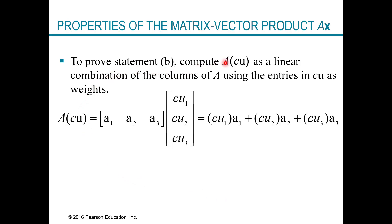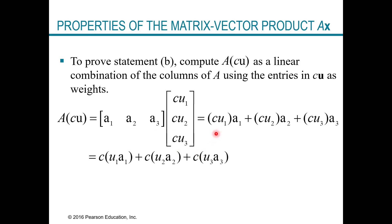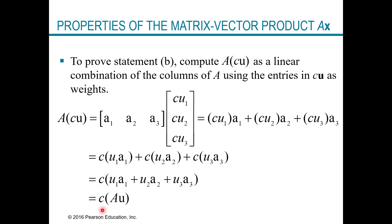To prove part B: A times (c·u), where our matrix A has columns A1, A2, A3 and the vector c·u has entries c·u1, c·u2, c·u3. This gives c·u1·A1 + c·u2·A2 + c·u3·A3. Since multiplication is associative, we can factor out c: c·(u1·A1 + u2·A2 + u3·A3), which is exactly c times Au. So both properties are proven.